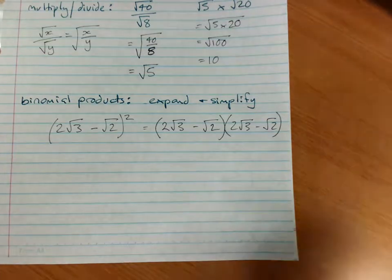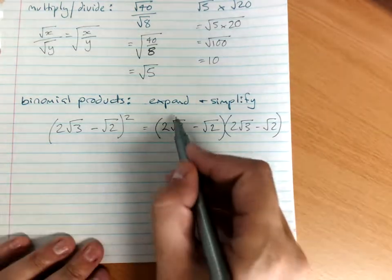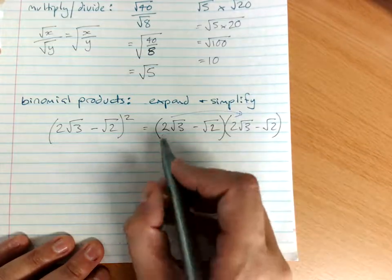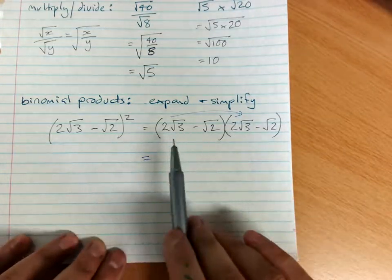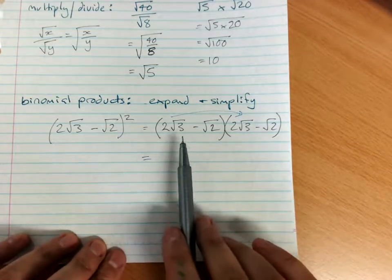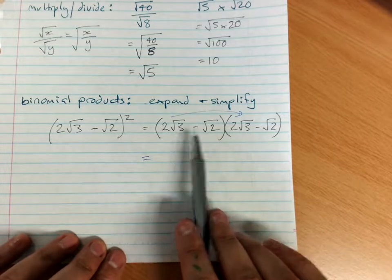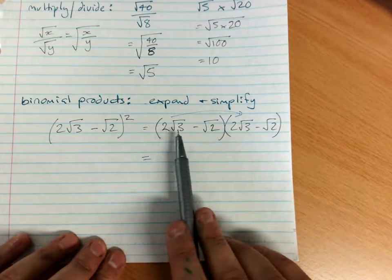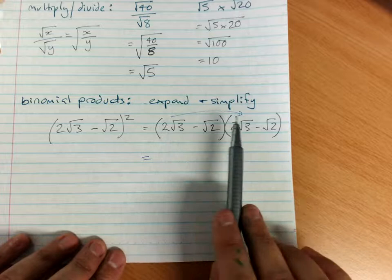So you remember FOIL, first outside, inside, last. First term times the first term. And notice that we really need to be a little bit clever with our squaring a root.